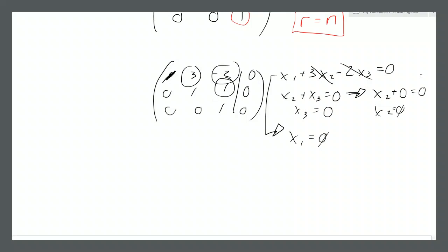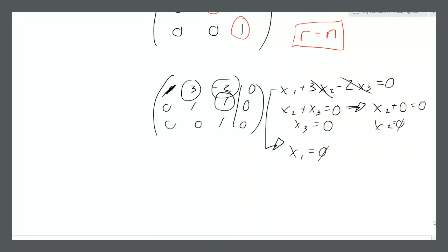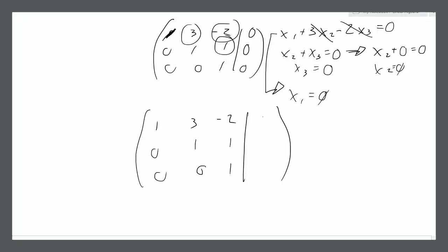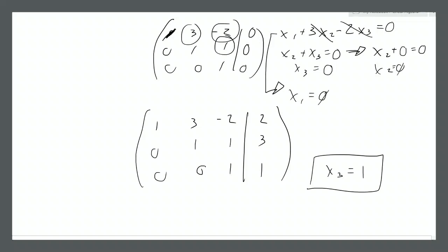If our rank is equal to our number of unknowns in a homogeneous system, the trivial solution is the only one. If it's not a homogeneous system, then the trivial solution doesn't necessarily exist. For example, if the augmented column has values like 2, 3, 1 instead of all zeros, then x3 equals 1, not 0. We still have a unique solution, it's just not a homogeneous system.